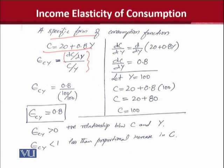A specific form of consumption function: C equals 20 plus 0.8Y. The elasticity is 0.8 divided by the ratio. Do it yourself. Let Y equal 100.